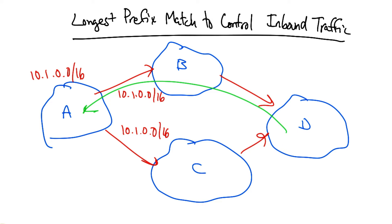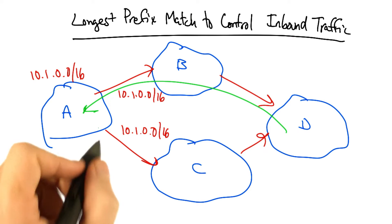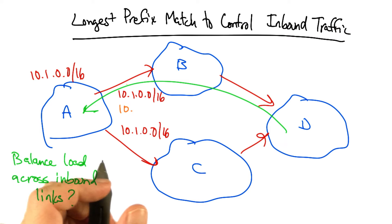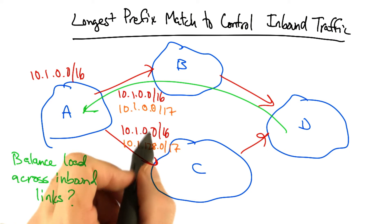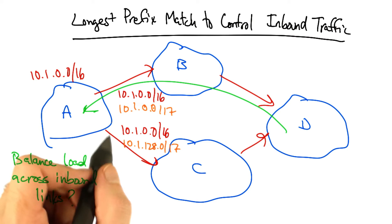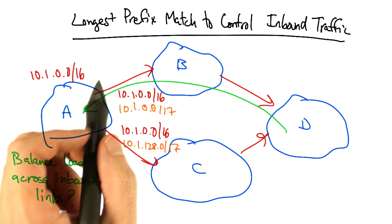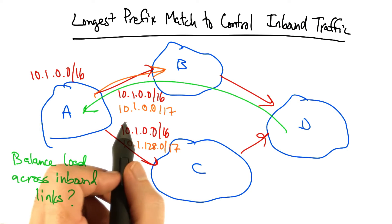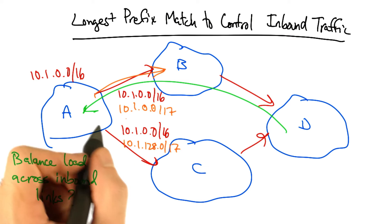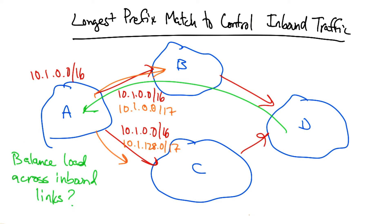But let's suppose that ASA wanted to balance that traffic across its incoming links. Well in that case, ASA could actually advertise routes for two more specific prefixes, effectively splitting the slash 16 in half. So in addition to advertising 10.1 slash 16 across both links, ASA might advertise 10.1 slash 17 on the top link and 10.1.128.0 slash 17, the other half of the slash 16, on the bottom link.